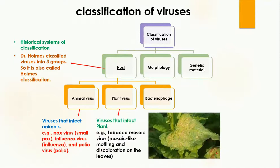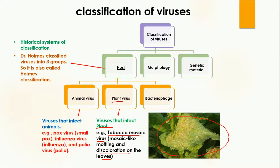The second type is plant virus, which infects plants. The example of plant viruses includes tobacco mosaic virus. This virus causes mosaic-like mottling and discoloration of leaves in plants. Here you can see the discoloration and mosaic-like pattern on the leaves.